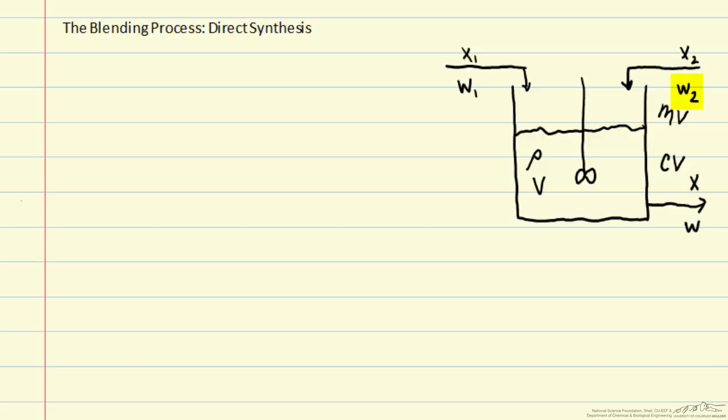Here, the manipulated variable is the flow rate in stream 2, and the mass fraction, x, is our control variable.